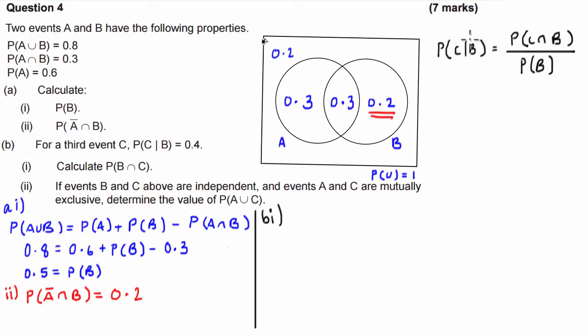So this formula here will work for any given sort of probability scenario. So for this one, we have the probability that C given that it's in B is equal to 0.4. So this part here is 0.4. Calculate B and C. So we have to calculate the numerator on this fraction.